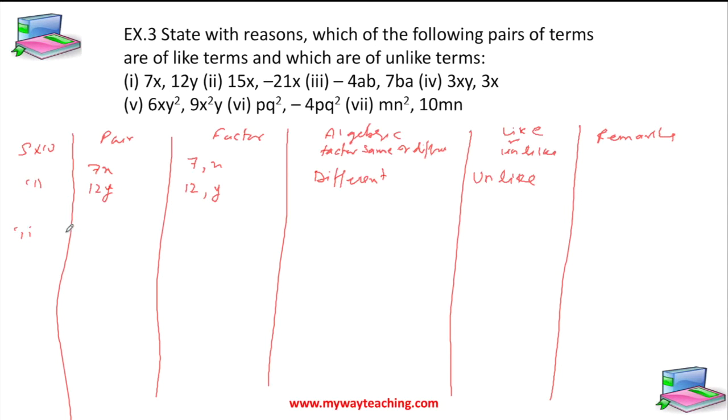Next, if we take 15x minus 21x, the factors are 15 and x, minus 21 and x. The algebraic factor x is the same, so it's like terms.